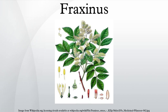Western Palearctic species include: Fraxinus angustifolia — narrowleafed ash; Fraxinus angustifolia subsp. oxycarpa — Caucasian ash, claret ash or Raywood ash; Fraxinus angustifolia subsp. syriaca; Fraxinus dimorpha; Fraxinus excelsior — European ash; Fraxinus holtei; Fraxinus ornus — manna ash or flowering ash; Fraxinus pallisiae — Pallas ash.